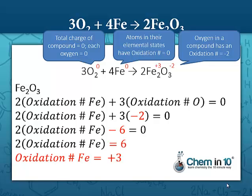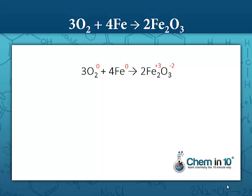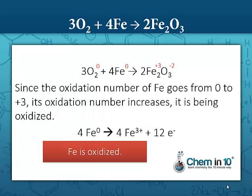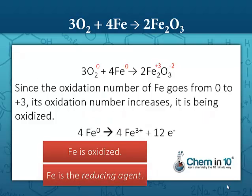Now that we know the oxidation number of each species, we can determine the oxidizing and reducing agents. Looking at iron, we see that iron goes from an oxidation number of zero to plus three. Since its oxidation number increases, it is being oxidized. Iron becomes Fe³⁺ and it's being oxidized in that process — that is its half reaction. Iron is oxidized, and that means iron is the reducing agent. Iron is causing the oxygen to be reduced, which is why it's called the reducing agent.